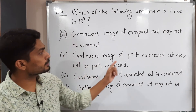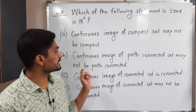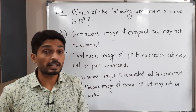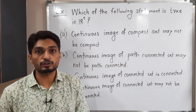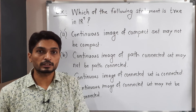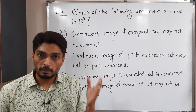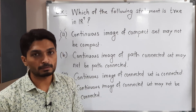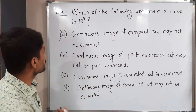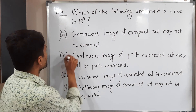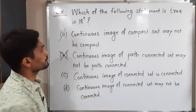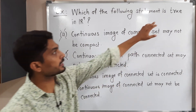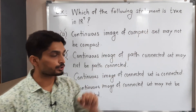Next: continuous image of path connected set may not be path connected. But actually, continuous image of a path connected set must be path connected, as we saw in the previous example. So this is also a wrong statement.